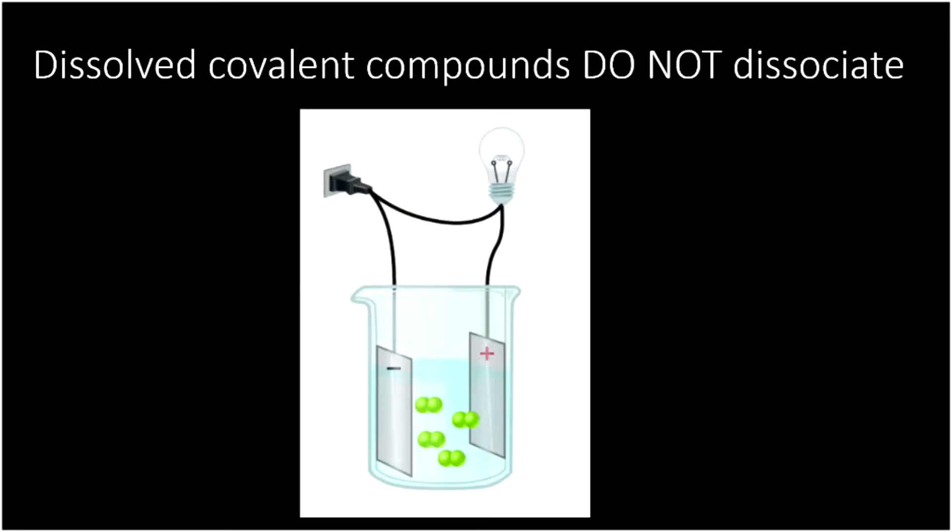Now, remember, ionic compounds dissociate and covalent compounds do not. Notice how you see these two atoms fused together. They're still together. They're still bonded. They stay together in solution. So they dissolve, but they don't dissociate. So dissociate means to split apart. And our covalent compounds don't do that. So they don't make ions. So they don't conduct electricity.